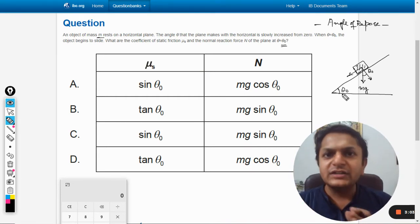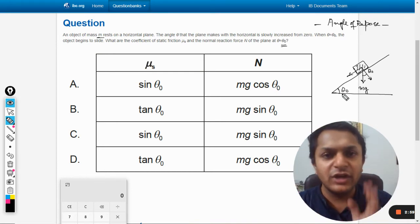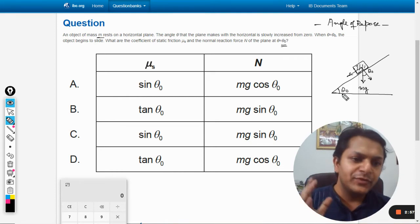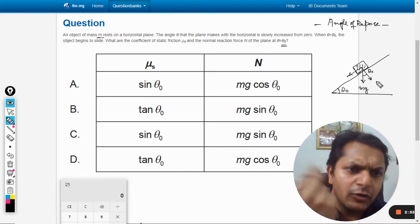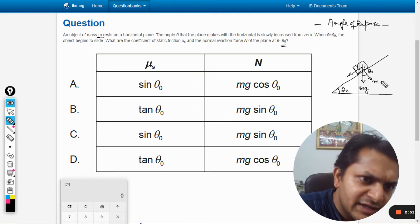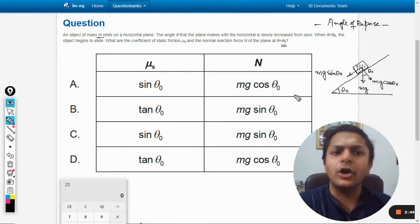If you face any problem with this, please mention that in the comment section. I will upload another video for that. Now this angle is theta naught, this angle is also theta naught. Now we can create the components: this will become mg cos theta naught, this will be mg sin theta naught.